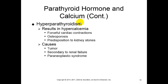Causes of hyperparathyroidism include tumors, and it can be secondary to renal failure - we saw that process where renal failure caused low calcium levels, which in turn caused parathyroid hormone to be excessively secreted. Also paraneoplastic syndrome, which is a type of cancerous growth.